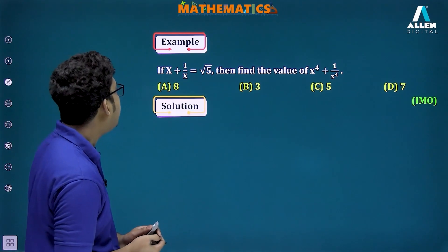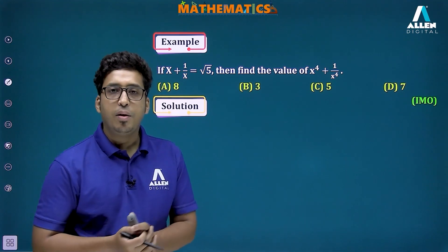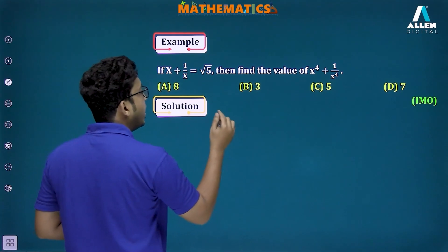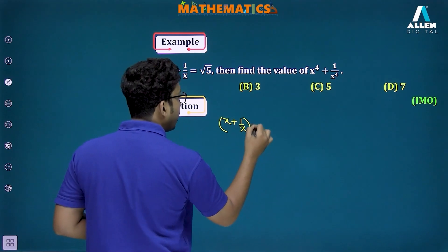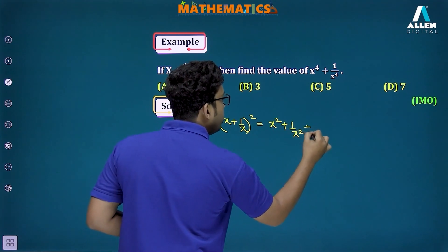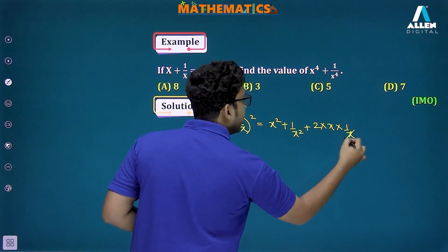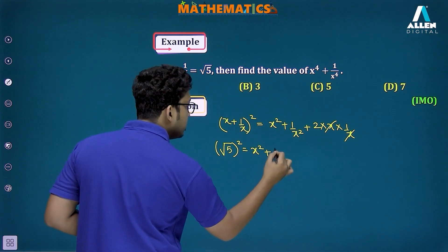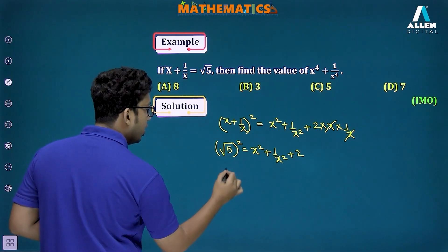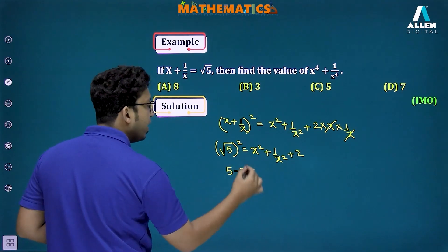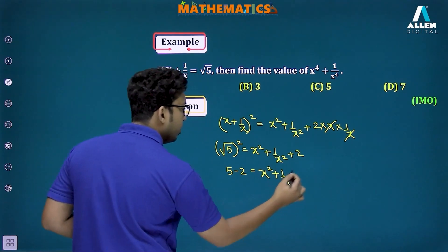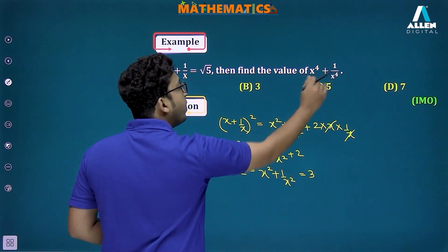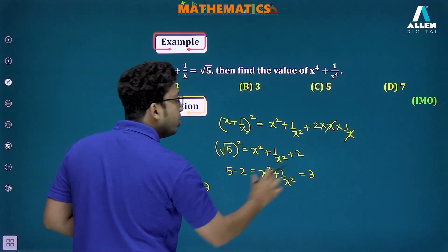Next question: if x+1/x = √5, find x⁴+1/x⁴. We square both sides: (x+1/x)² = x²+1/x²+2. So (√5)² = x²+1/x²+2, giving 5 = x²+1/x²+2, and therefore x²+1/x² = 3. Now we need x⁴+1/x⁴, so we square again.